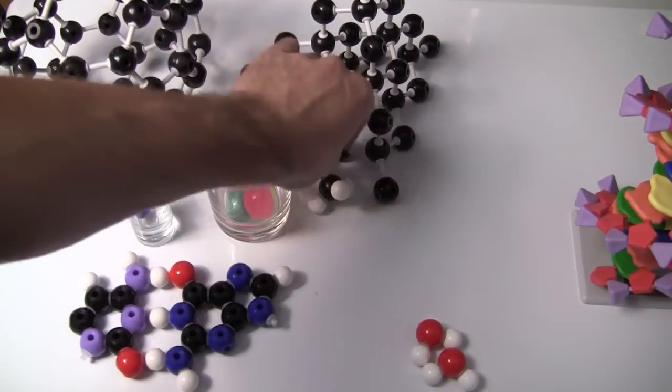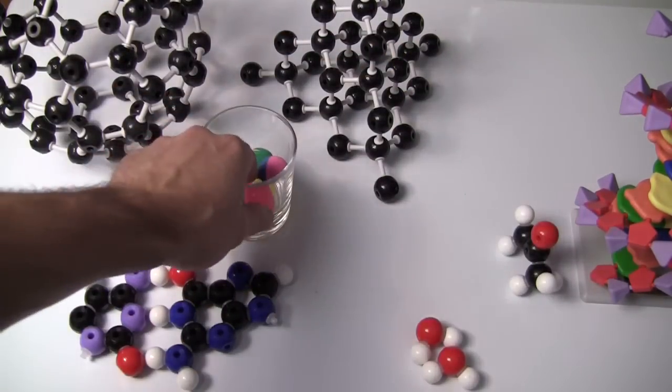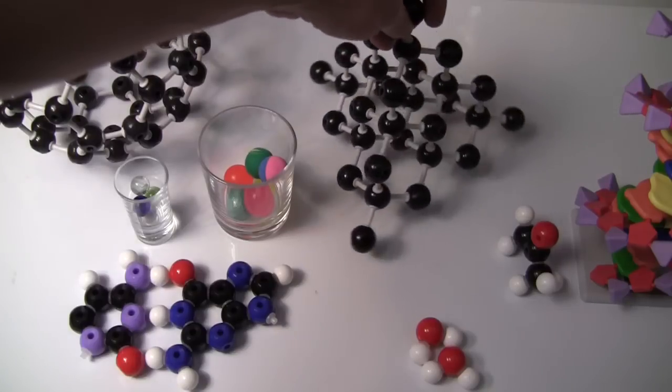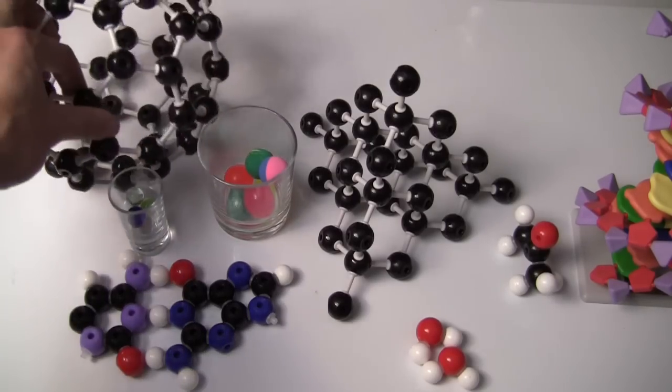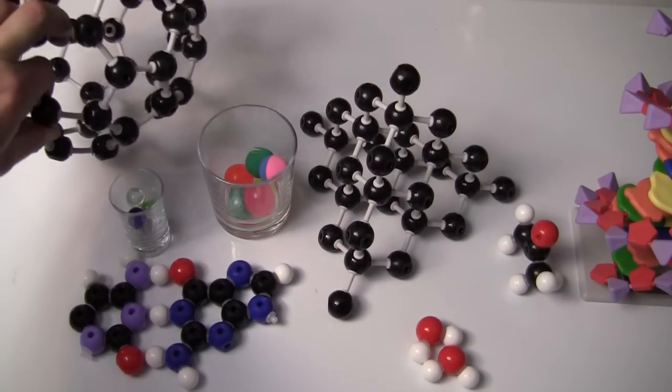Now, obviously, you can sort of stack these atoms together in different arrays. So, this is diamond, made entirely of carbon, of course. That's a different arrangement of carbon called fullerene.